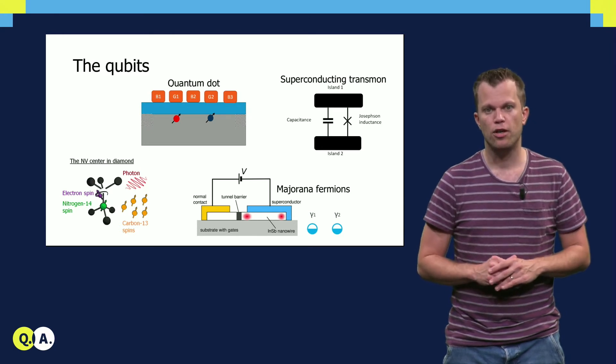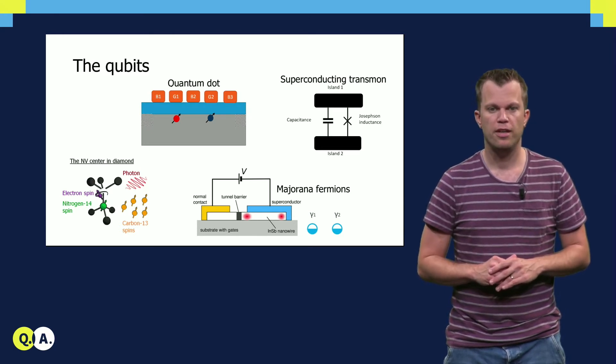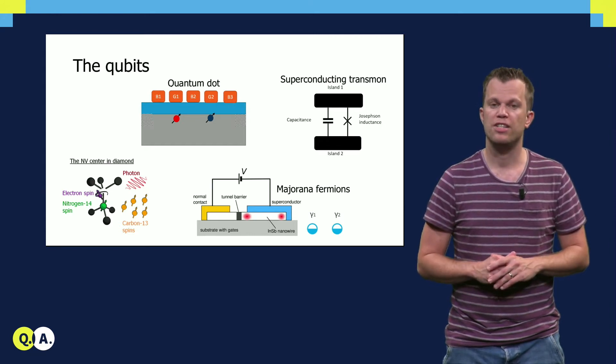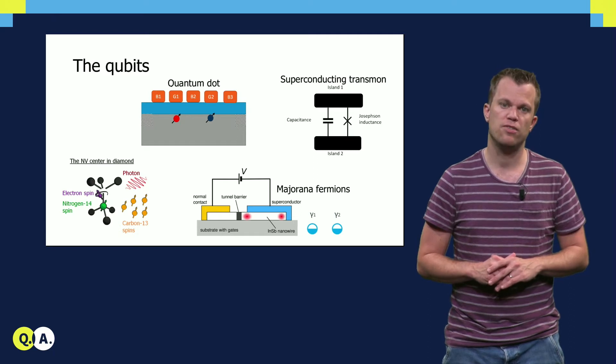Superconducting transmons offer this advantage as well. In addition, they are larger and so, at least in the fewer qubit regime, it is even easier to fabricate these types of qubits.